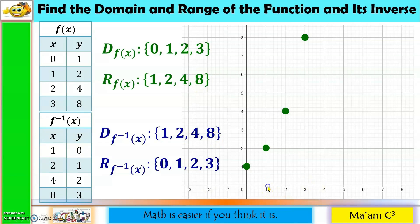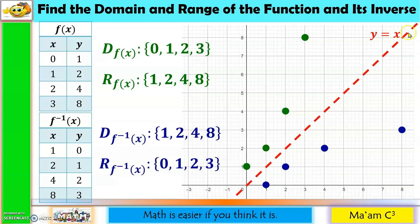We now plot the inverse points: (1,0), (2,1), (4,2), and (8,3). To confirm these are inverses of one another, we draw the line y equals x. When we fold the Cartesian plane along this line, these points coincide with one another.